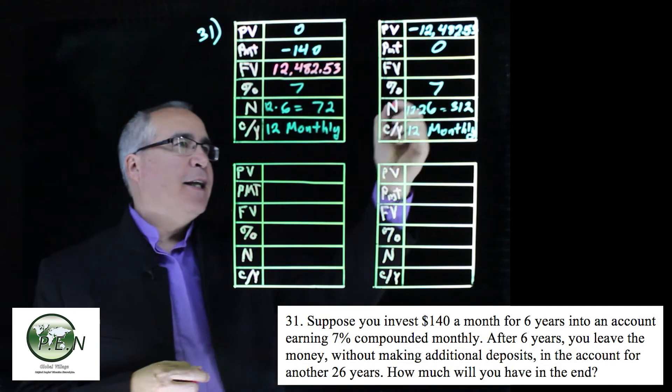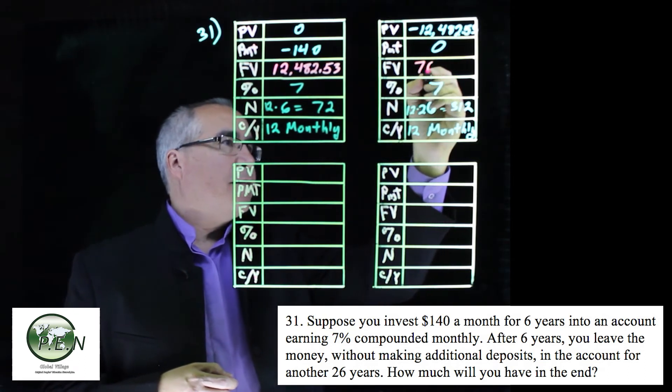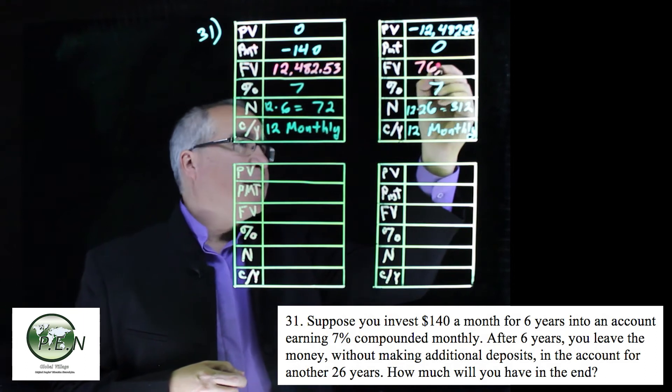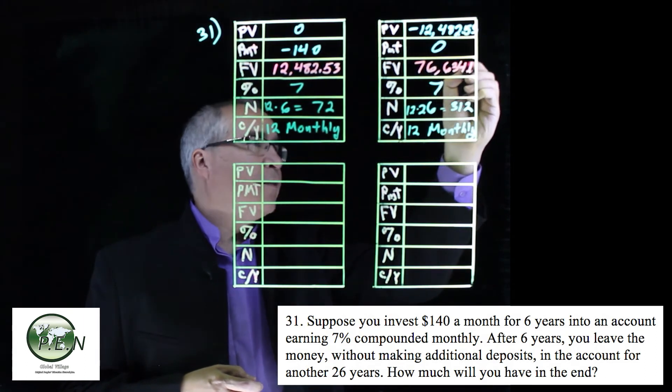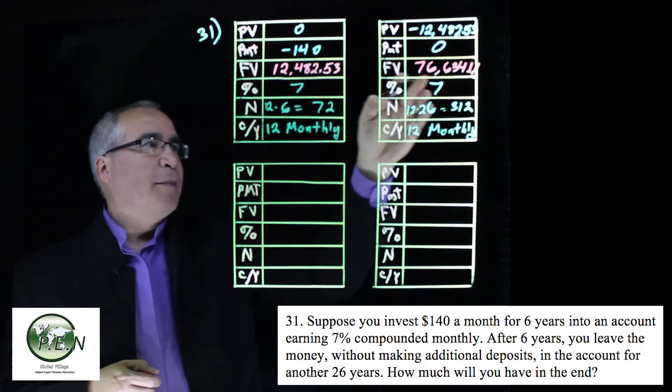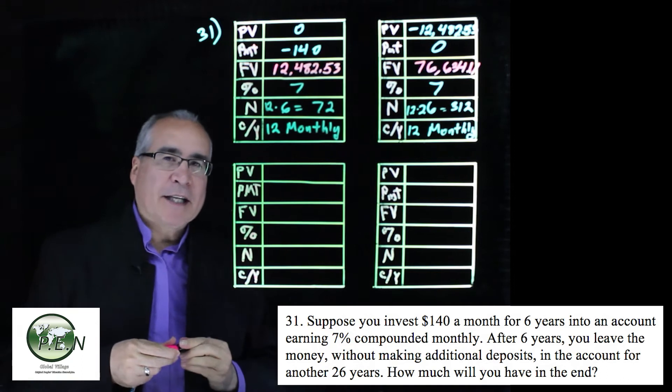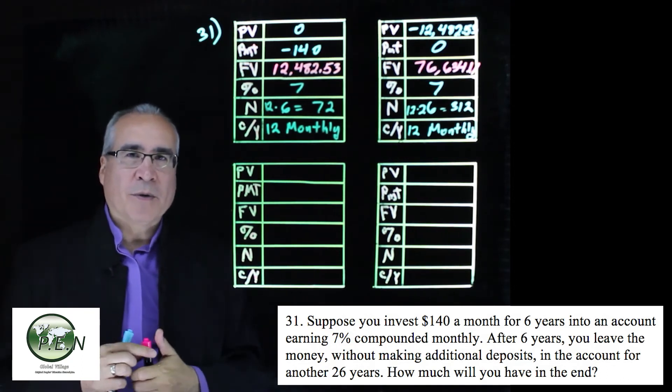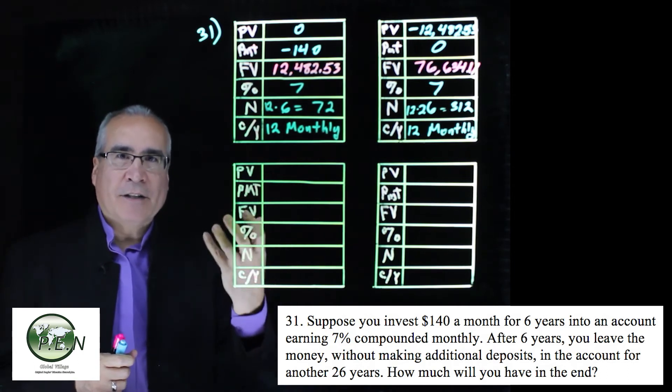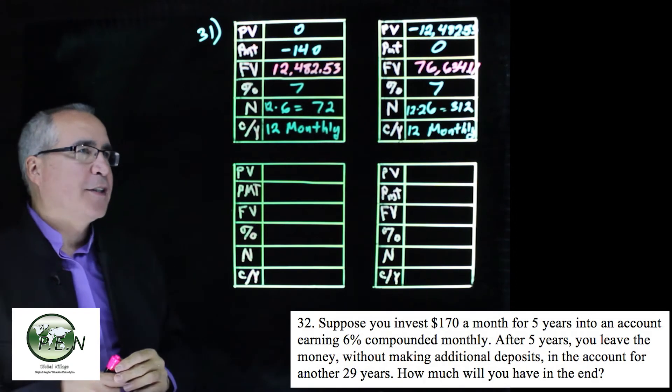We just click the future value key and it comes up that we've got $76,634.11. It made more money just sitting there than it did for the first seven years, but that's the power of the time being up in the exponent—exponential growth with the exponent itself being the longer we leave it in, the greater growth we'll see.